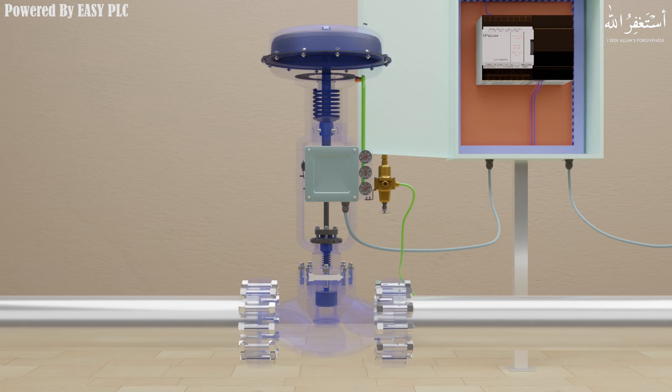Because of how pneumatic actuators are built, a control valve will move to a specific position when a loss of the control signal occurs. As the supply air pressure is increased, the rubber diaphragm pushes against the spring and moves the valve stem upward out of the valve body. As the supply air pressure is reduced, the spring will move the valve stem inside the valve body.